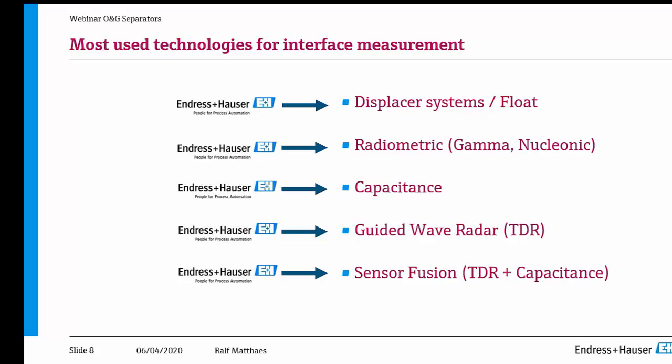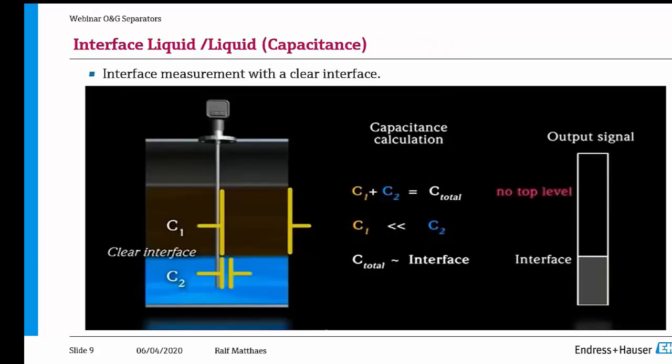Having a look at capacitance first — with a capacitance probe we see a change in the capacitor. Here we use the advantage of water having a very high dielectric constant. Typically water has a dielectric constant of 80, oil has a dielectric constant of 2 — very low. So the difference between these two media is quite large.